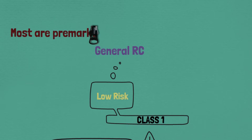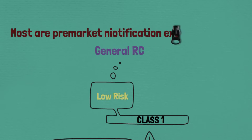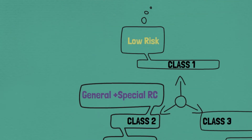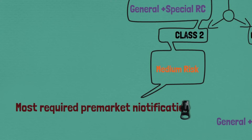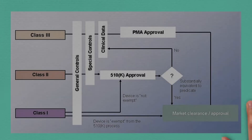Most Class 1 devices are exempt from pre-market notification, or 510k clearance. Pre-market notification is the submission made to the FDA to demonstrate that the device is safe and effective, or equivalent or better than an existing similar marketed device. Most Class 2 devices require pre-market notification, and most Class 3 devices require pre-market approval. Most Class 1 devices go directly to market release without pre-market notification, while the majority of Class 2 devices undergo pre-market notification before market release. Class 3 devices require clinical data to prove the device is safe and effective, and must also have pre-market approval before market release.